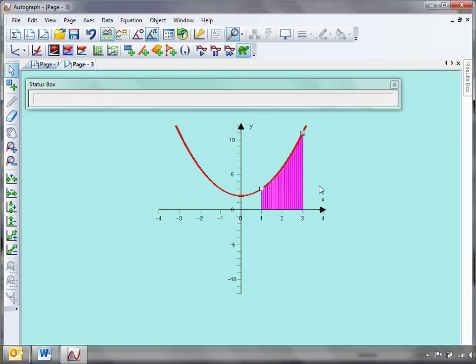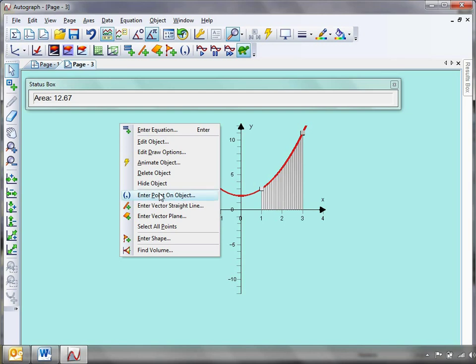Now, to find the volume. Dead, dead easy. And make sure your little turtle's on your little slow plot. Give your region a click. And if you right click, fingers crossed down there, you should have find volume.